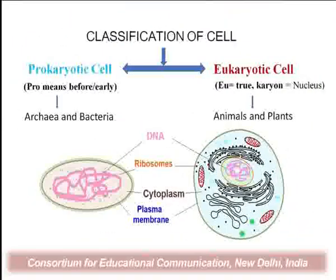The fundamental features of both prokaryotic and eukaryotic cells are the same: both cells have DNA, ribosomes, cytoplasm, and plasma membrane. The plasma membrane covers the outer surface of the cell and defines the cell shape and size. Ribosomes are present in both cells — 70S in prokaryotic cells and 80S in eukaryotic cells. The cytoplasm is the aqueous, jelly-like fluid present inside the plasma membrane.